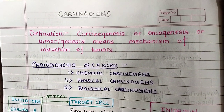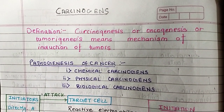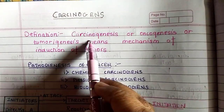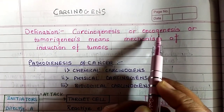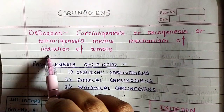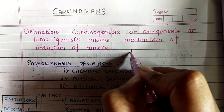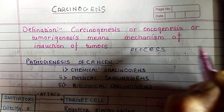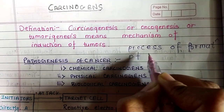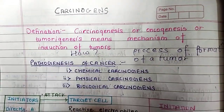Hello everyone, today I will be taking a short topic on carcinogenesis. So first of all we will see what is carcinogenesis. The definition is that carcinogenesis, or oncogenesis, or tumorigenesis, means the mechanism of induction of tumors — that is, the process of how a tumor is formed.